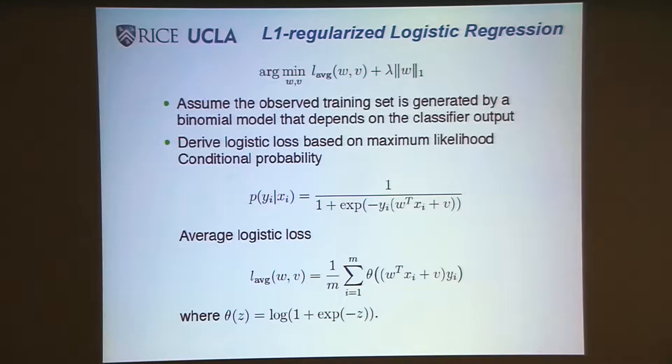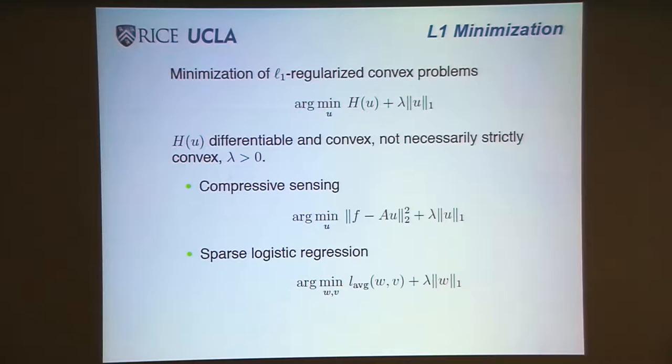We're going to do it differently. The difference will be the difference between ISTA and linearized Bregman. Instead of fixing lambda, which means you've chosen the level of sparsity, we're going to actually get a sequence of solutions, approximate solutions, which will give you a nice path. You can pick your own private lambda very quickly. That's the optimization problem, a convex optimization. It's differentiable.